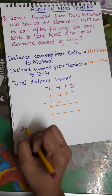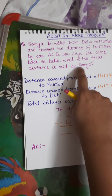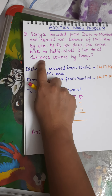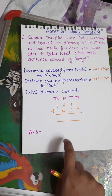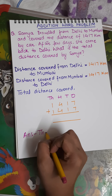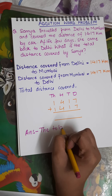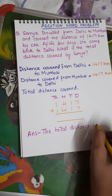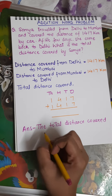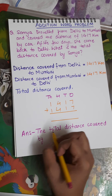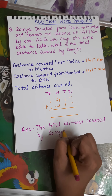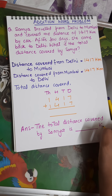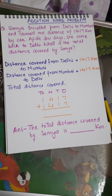Now, very important — my answer statement. The question says: what is the total distance covered by Somya? So the answer statement will be: the total distance covered by Somya is ___ kilometers.